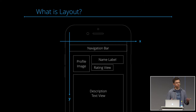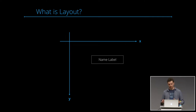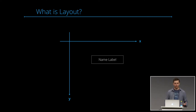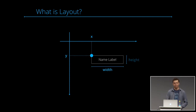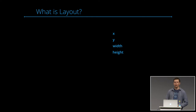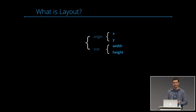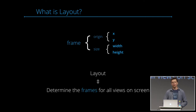In order to answer 'where,' we always need a coordinate system. Our coordinate system is the device coordinate system. If we focus on one component — the name label, for example — we can answer 'where' for that label: we have the X coordinate, the Y coordinate, a width, and a height. The X and Y describe the view's origin, width and height describe the view's size, and together these are the view's frame. So to put it simply, layout is just another word for determining the frames for all views on screen.